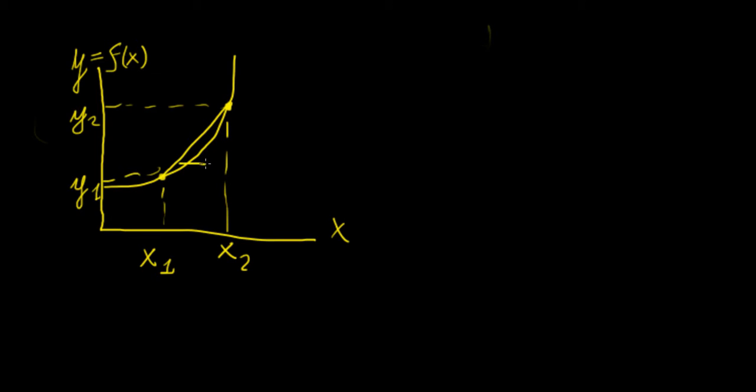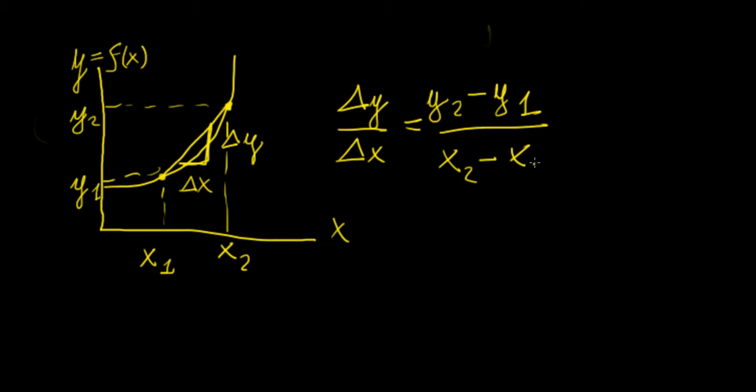We know from pre-calculus and from elementary linear equations that the gradient of a function is simply the rise over the run. So basically just that. In this case, the gradient of the function, which is represented by delta y over delta x, is simply going to be the difference in those coordinates. So for the top one, we're going to have y2 minus y1, and then x2 minus x1. So this is going to be the gradient.